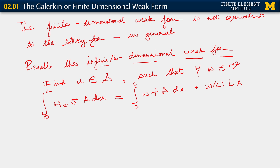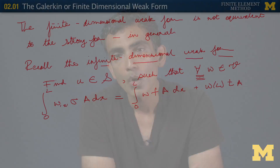And then we proved that this was equivalent to the strong form. In proving that it was equivalent to the strong form, we very critically used the fact that the weak form holds for all W belonging to V. This was what allowed us to then say that if it holds for all W belonging to V, it also holds for a very special W. And for it to hold for that very special W, we realized that the implication was that the strong form had to hold.